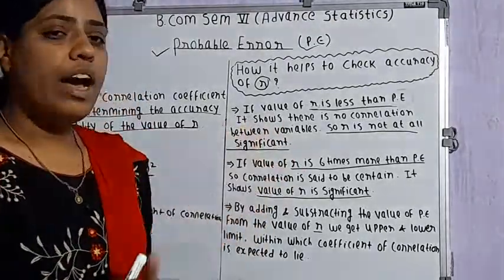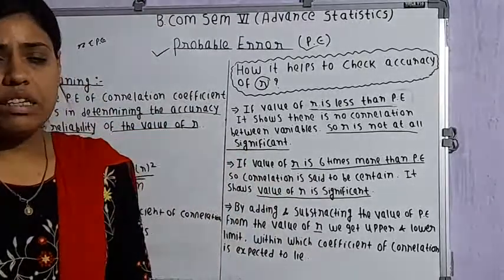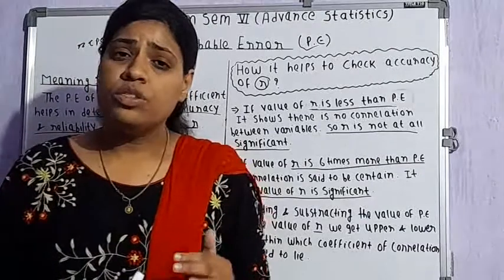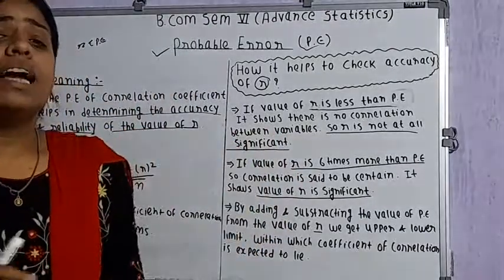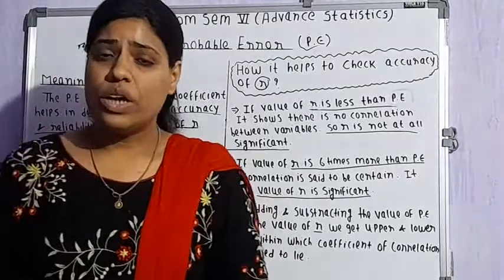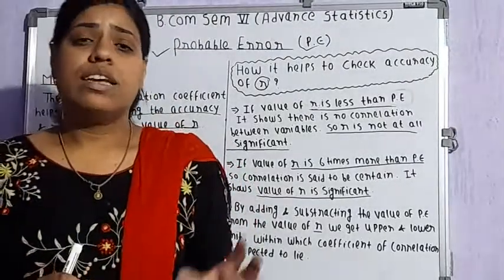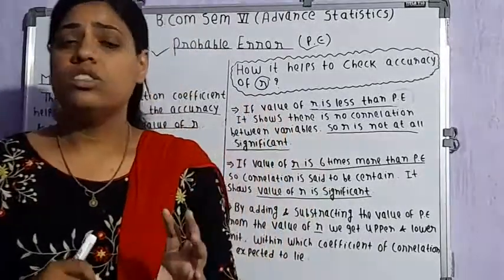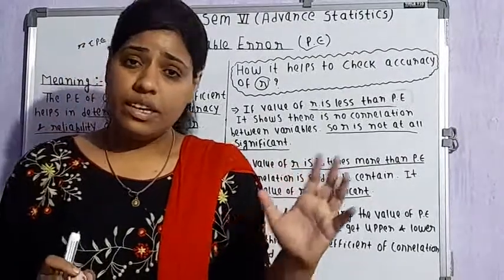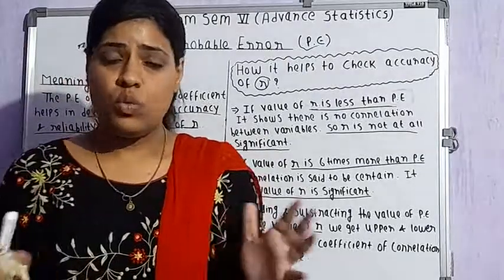In this subject we are dealing with correlation analysis. Till now we have seen the simple problems in correlation analysis. Today we are going to move towards the next step — that is the calculation of probable error. Because when you are asked a question for 16 marks in the examination, you are asked to calculate the coefficient of correlation and the probable error from the given data. So we need to understand the concept and the calculation of probable error as well.